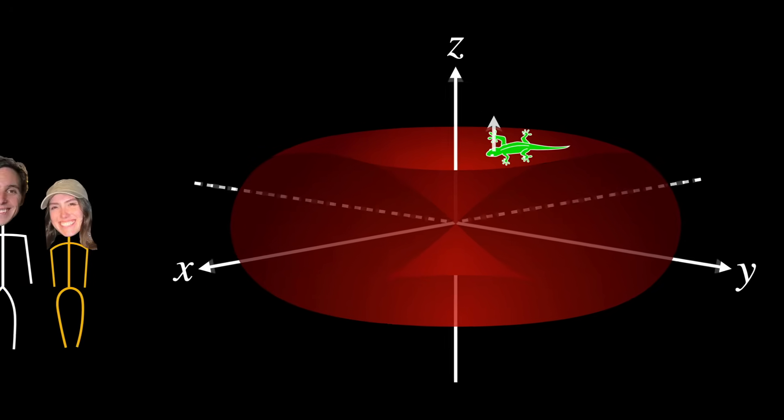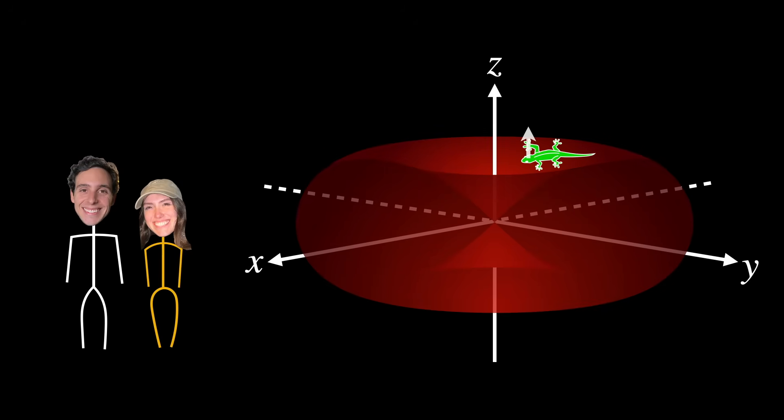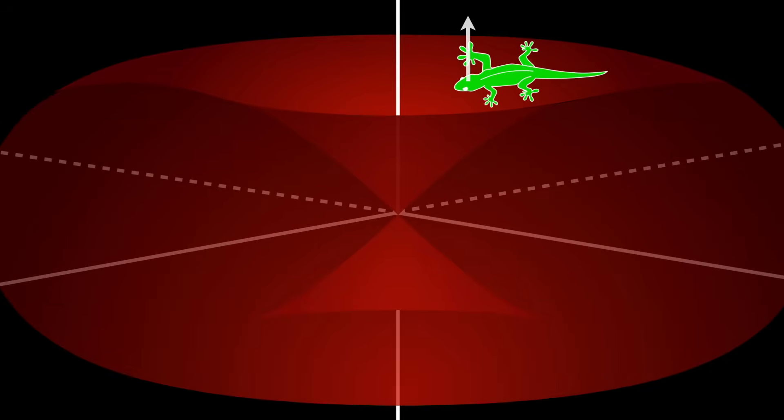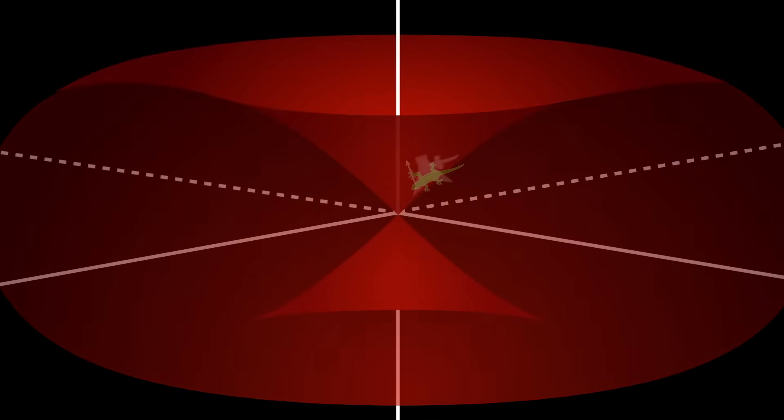First of all, at least for us observing the scene in three dimensions, we would see the lizard shrinking as it approaches the central point until it becomes just a point, and then he comes out the other side with opposite orientation.